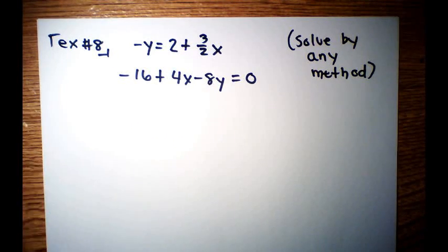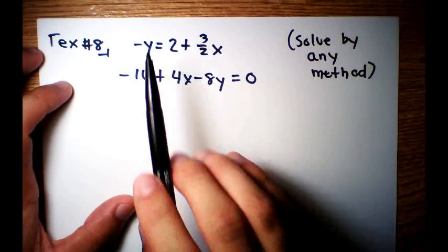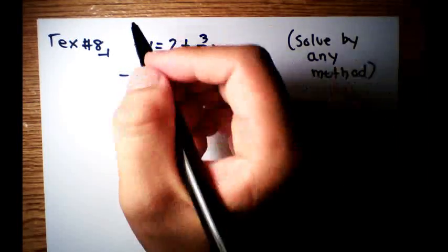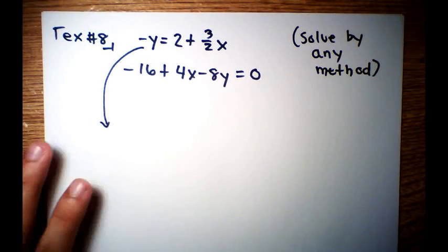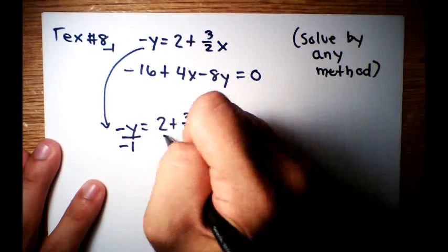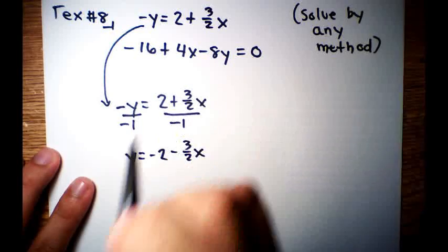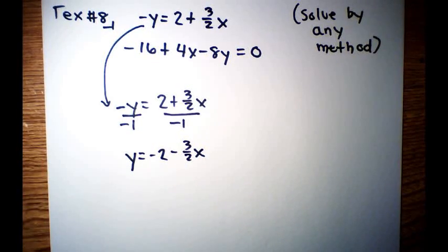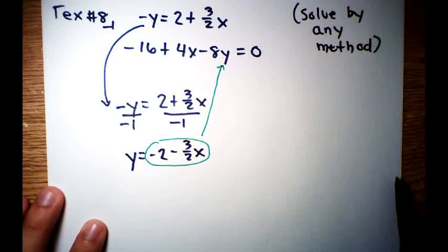Last example for this set of videos for substitution and elimination. Solved by any method — for example number 7 we did elimination. In this case, I am going to do substitution. We're almost there because we have a negative y, so I'm going to choose substitution because y has almost been solved for you. I'm going to divide everything by negative 1. So negative y equals 2 plus 3 halves x becomes y is equal to negative 2 minus 3 halves x. When you divide by negative 1, all your signs change. Since y has already been solved, we're just going to plug this back into the other equation.